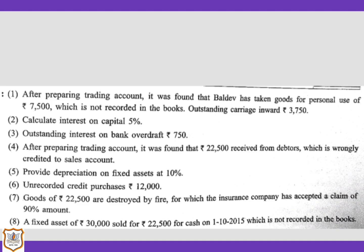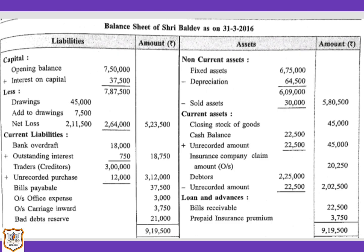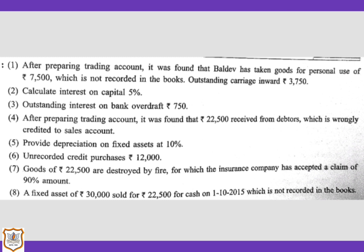In adjustment three, outstanding interest on bank overdraft is Rs. 750. This expense belongs to the current year but is unpaid. It will be shown on the debit side of the profit and loss account as outstanding interest on bank overdraft, amount Rs. 750. For the second effect, it will be added to bank overdraft on the liability side under current liabilities, making the total bank overdraft Rs. 18,750.